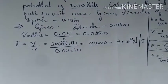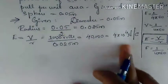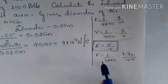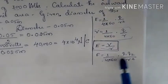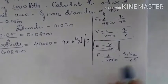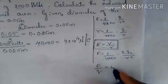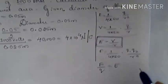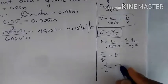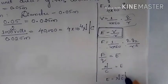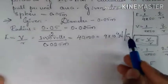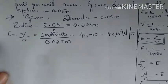The unit for electric field is Newton per Coulomb. This is because force has units of Newton, and dividing by charge in Coulombs gives N/C for the electric field. So E = 4 × 10⁴ Newton per Coulomb.